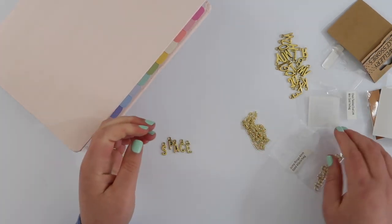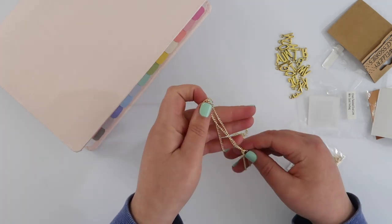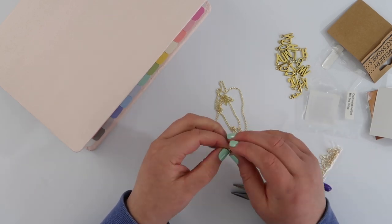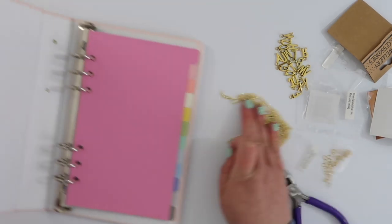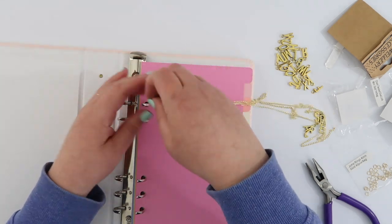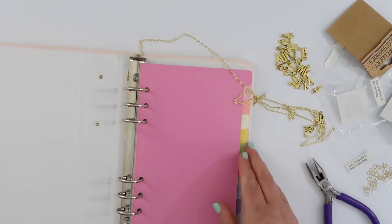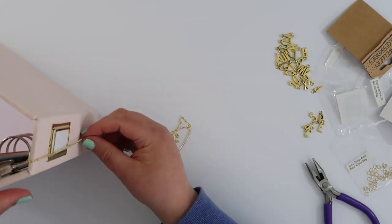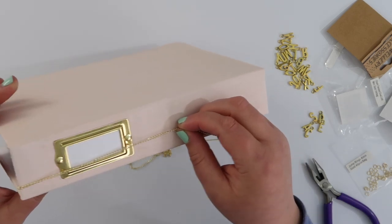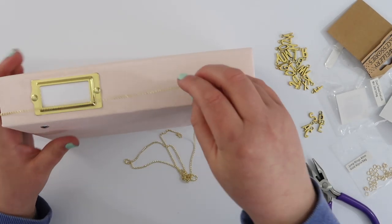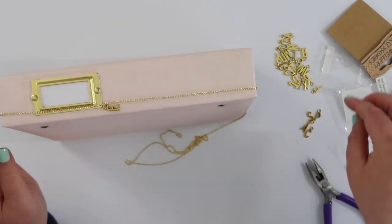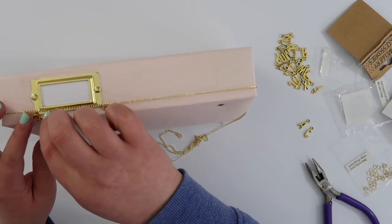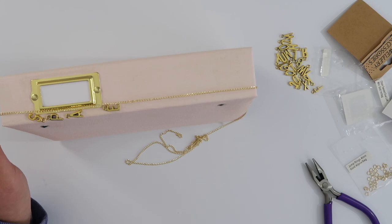And the last thing I wanted to do to prep for my album was to create a charm for the spine. And I am going to use these little alpha charms to spell out my word for the year, which is space. So to create this charm, I've just got some gold chain and I attached a jump ring to one end so that I can hook that around one of the rings of the binder. And then I'm just pulling that down the spine to measure sort of how long I want it to be. And then I can go ahead and trim that chain. I'm just using the letters to sort of work out where I want to put it. I couldn't decide whether I wanted the letters to go beside the little book plate or underneath it.